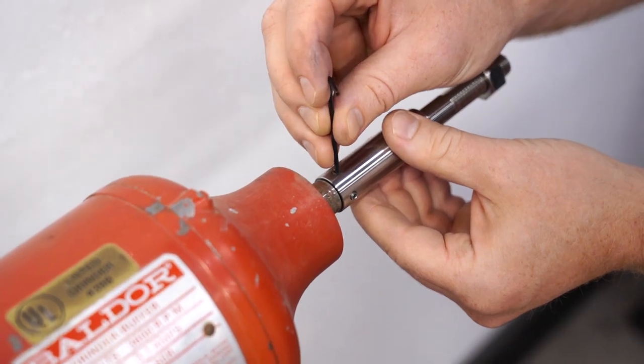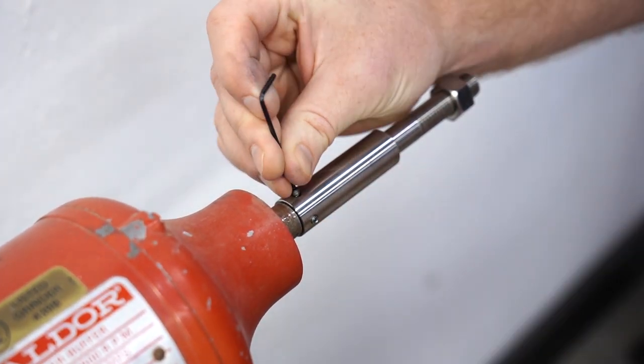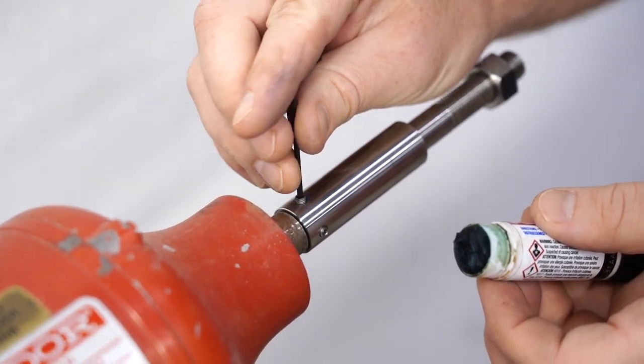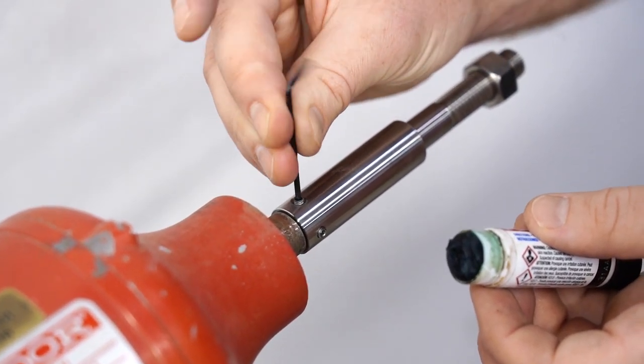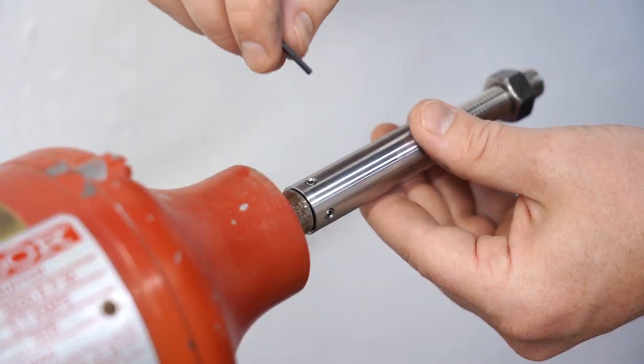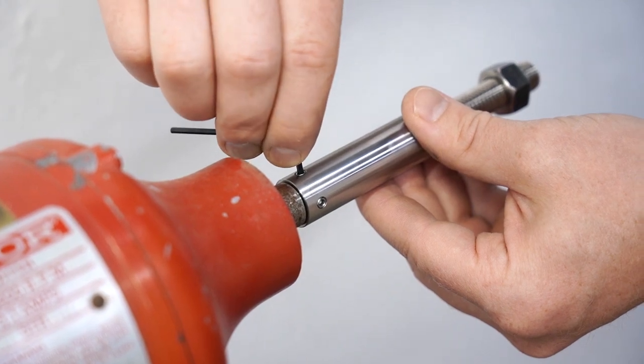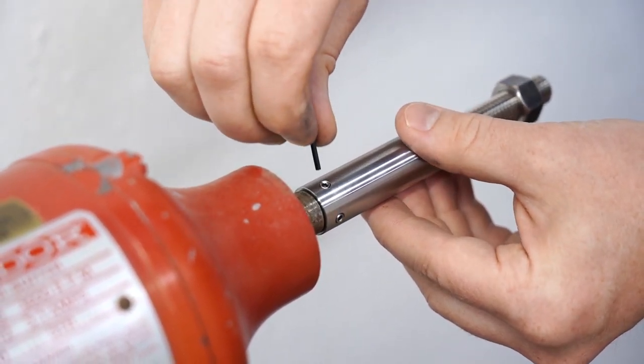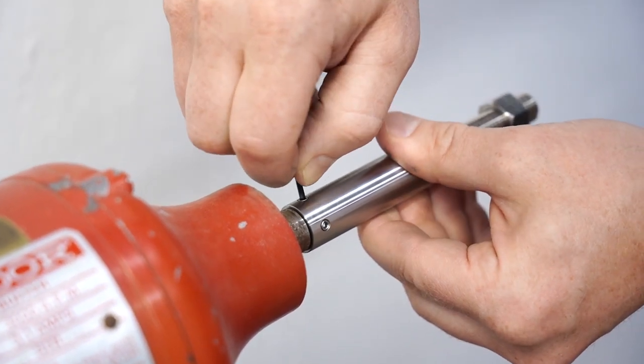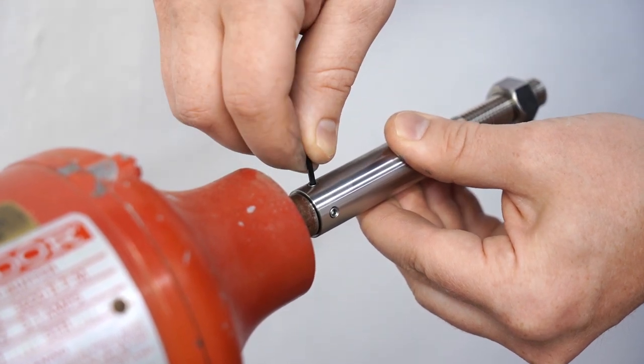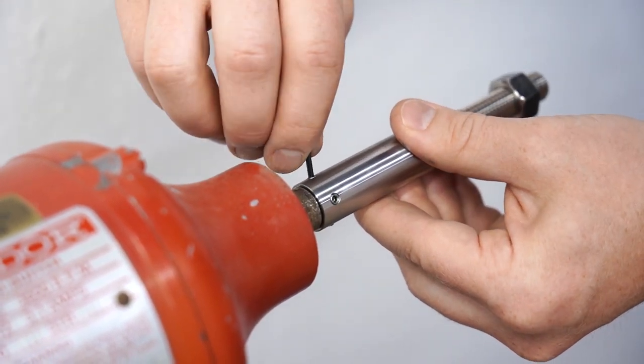And we're going to install some Loctite onto these set screws. I'm going to go finger tight for now. Now we're going to tighten the set screws in an even fashion. Tighten one, spin it 180. Tighten the next. Spin it 270, and then 180.